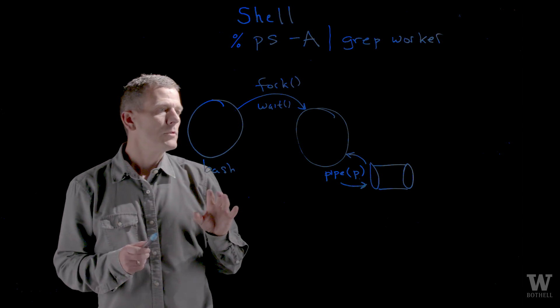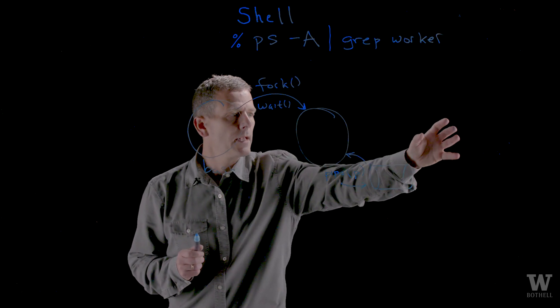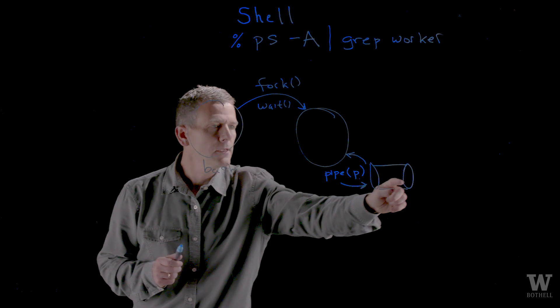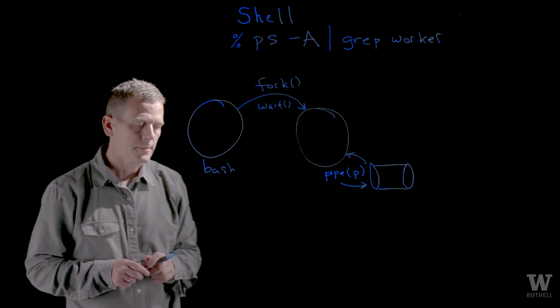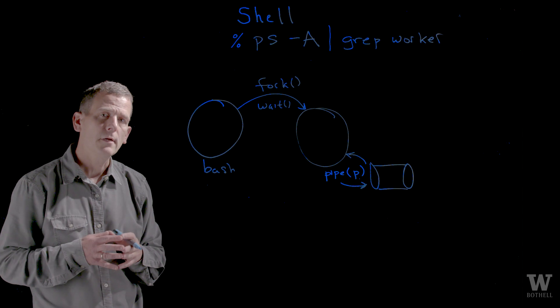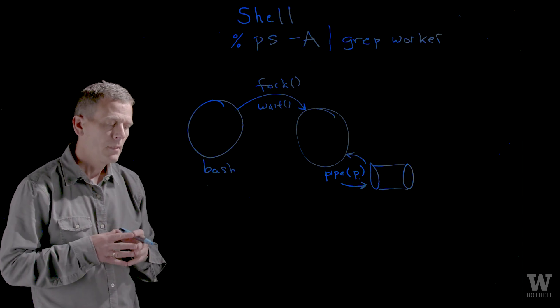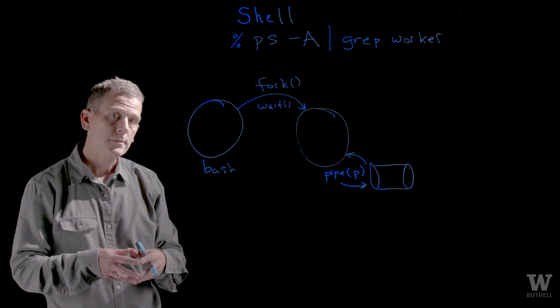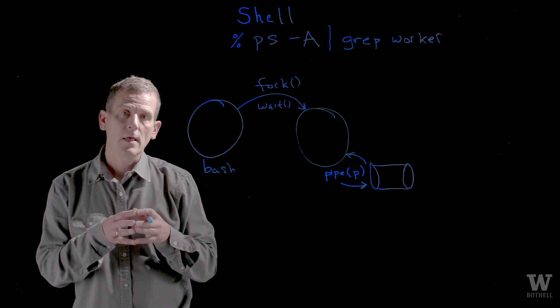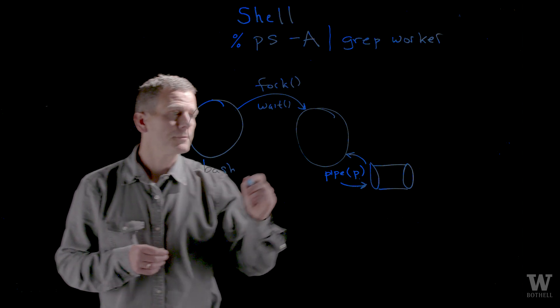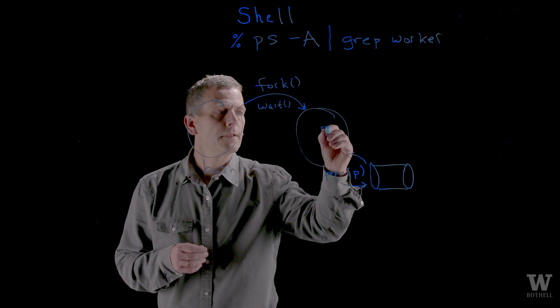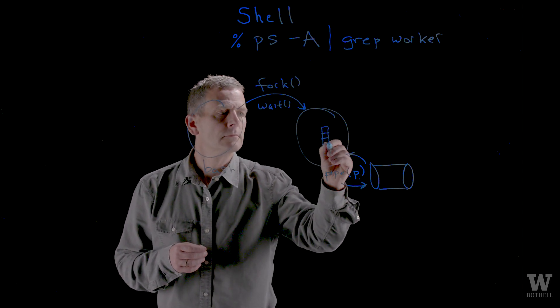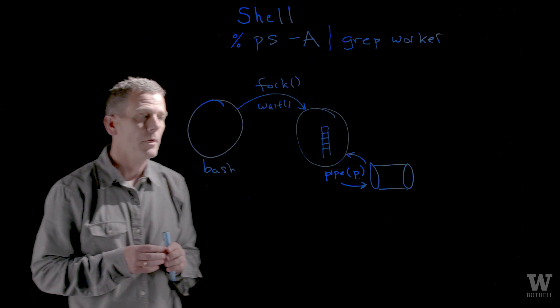What I want to do is create another process over here and pipe its output into the input of this process. We need to understand another concept called file descriptors or the file descriptor table. Every process when it starts has an array of file descriptors. I'll draw it like this. This is metadata for that process that was created.